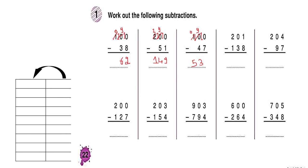Work out the following subtractions. So 10 minus 1 is equal to 9 as we said previously. We have to memorize this table. 30 minus 1 is equal to 29, 40 minus 1 is equal to 39, 50 minus 1 is equal to 49, 70 minus 1 is equal to 69, 80 minus 1 is 79, and 100 minus 1 is equal to 99.